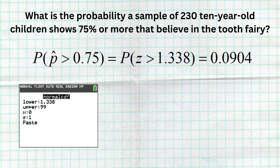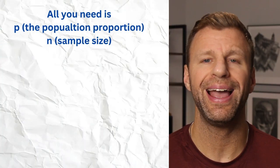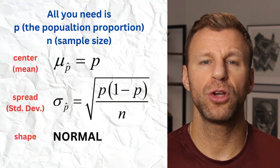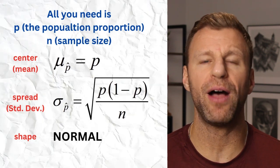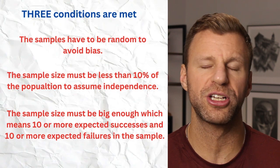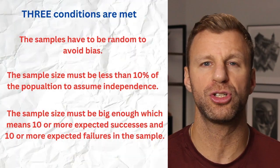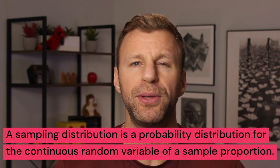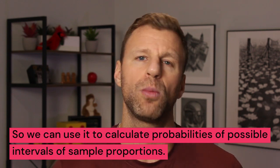That's how easy it is to build a sampling distribution for sample proportions. All you need is two things: the population proportion p and the sample size n. Then you can find your mean, standard deviation, and shape. Don't forget the three rules: the sample must be random, the sample size must be under 10% of the population, and you need 10 or more expected successes and failures for the normal distribution to apply. Once you have the normal distribution set up, finding probability is simple — just calculate z-scores and use normalcdf on your calculator.